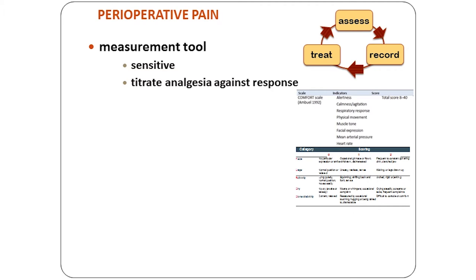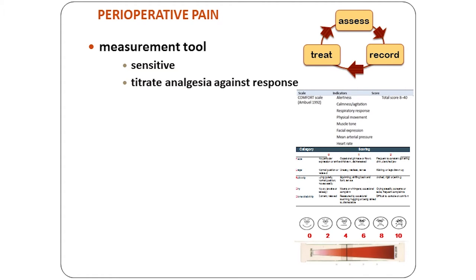In intensive care we use the COMFORT tool, which looks at behavioural and physiological parameters. In pre-verbal infants we use the FLACC tool, which is an observational behavioural tool. In older children over about four or five years of age they can actually use a FACES scale to report intensity of pain, and beyond about eight to ten years children can use a numerical rating scale as we do in adults.